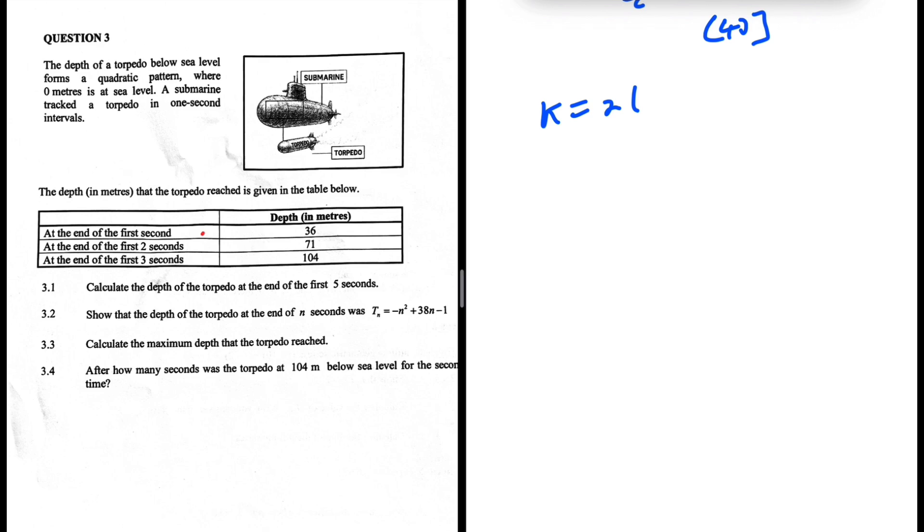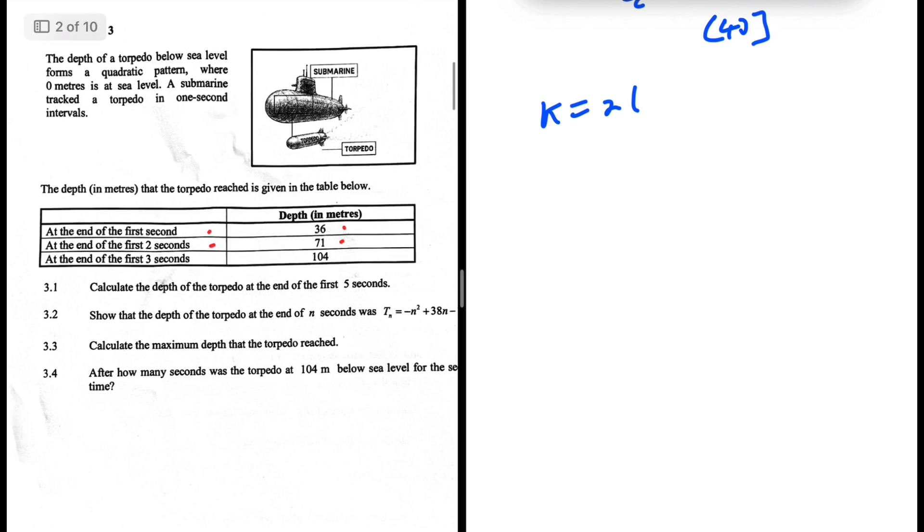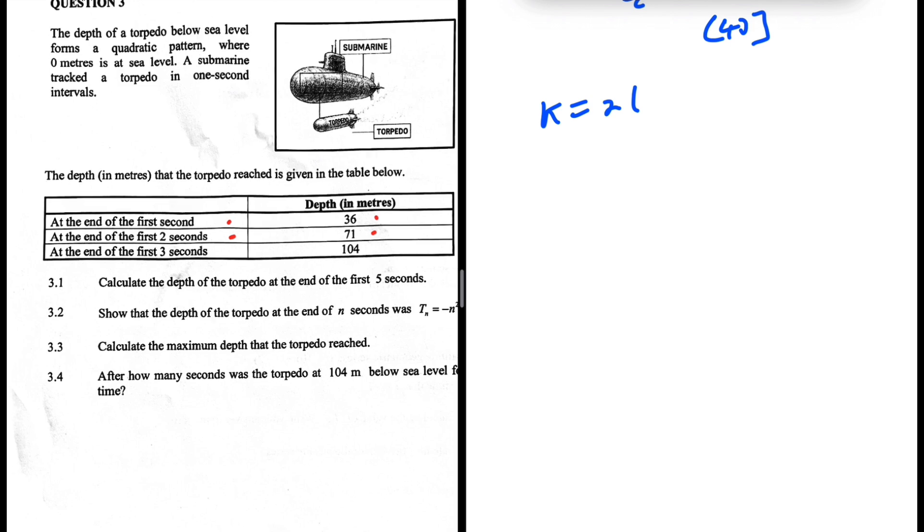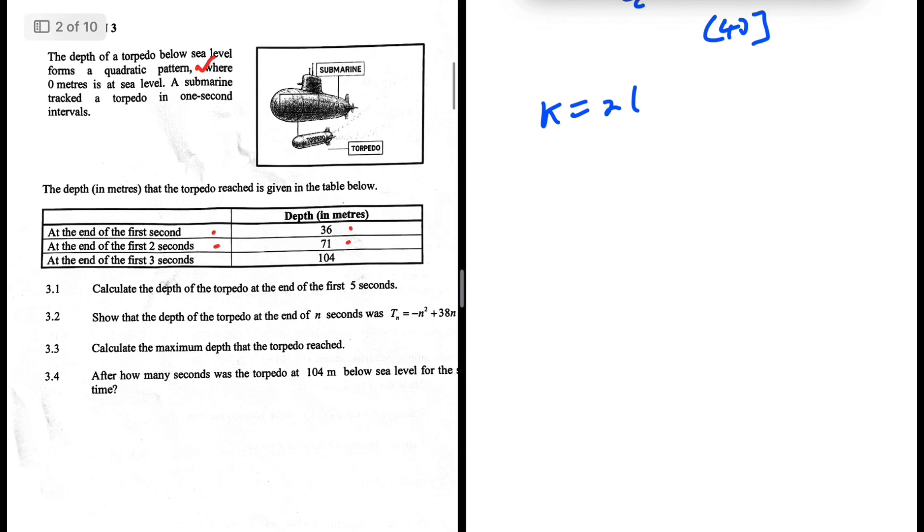So after one second, 36 meters. The first two seconds, 71 meters. The first three seconds, 104. We know this forms a quadratic pattern. Question 3.1: calculate the depth of the object at the end of the first five seconds. At the end of the first second is 36 meters deep, then 71, then 104.